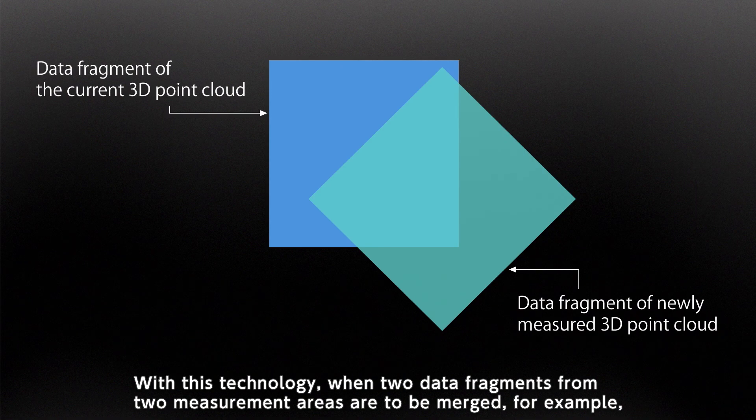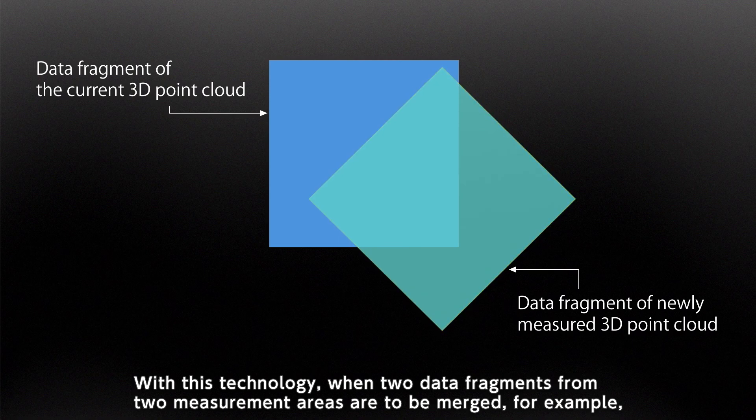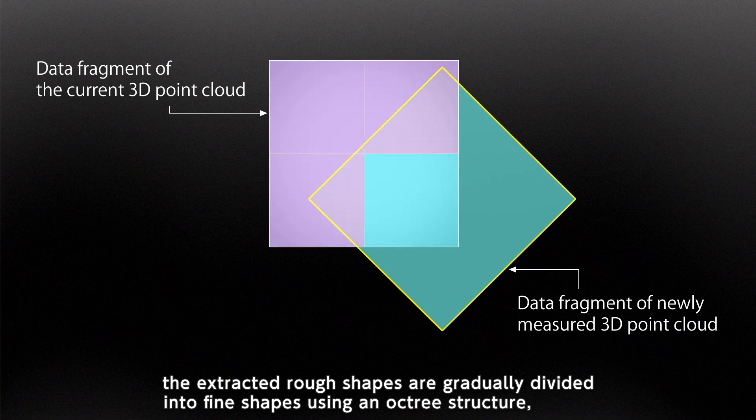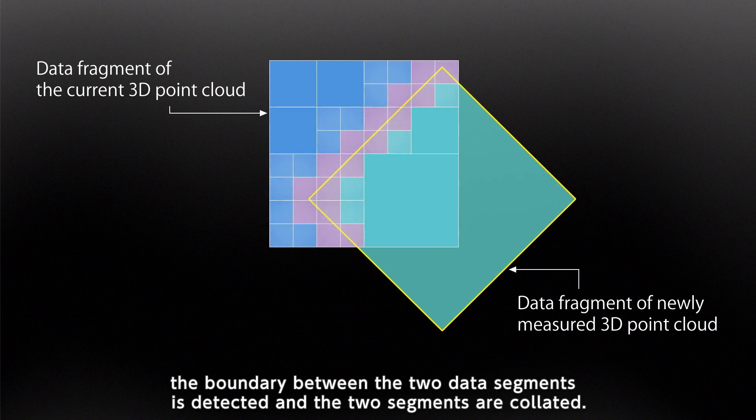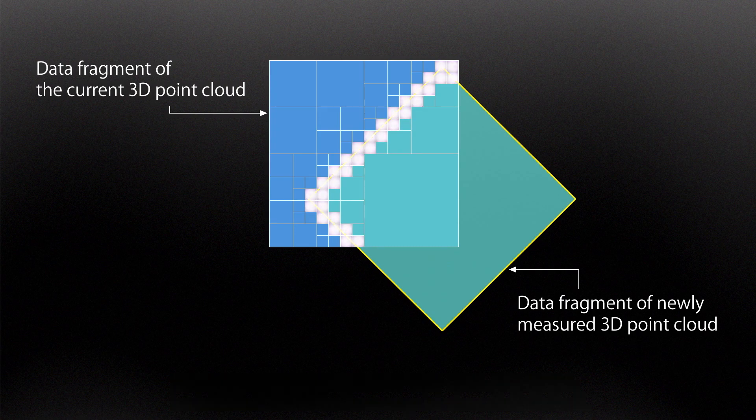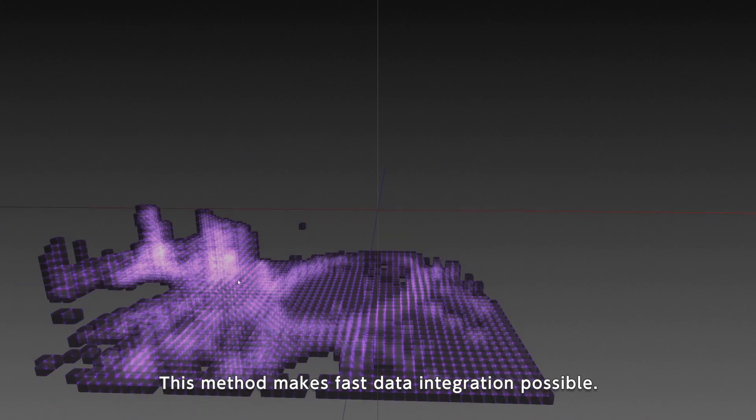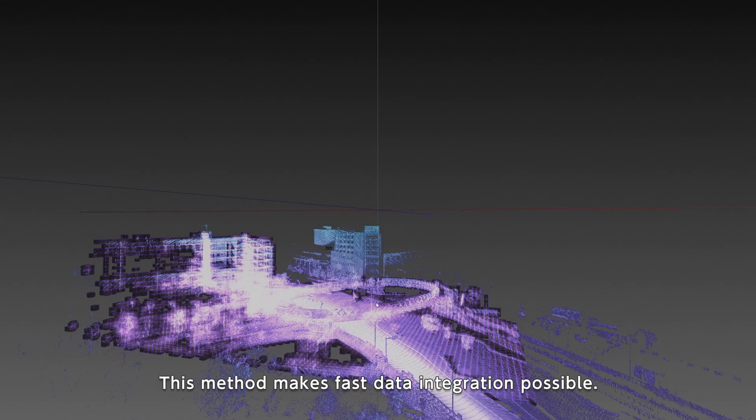With this technology, when two data fragments from two measurement areas are to be merged, the extracted rough shapes are gradually divided into fine shapes using an octree structure. The boundary between the two data segments is detected and the two segments are collated. This method makes fast data integration possible.